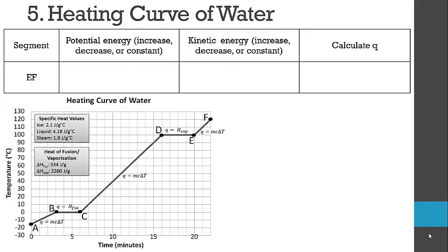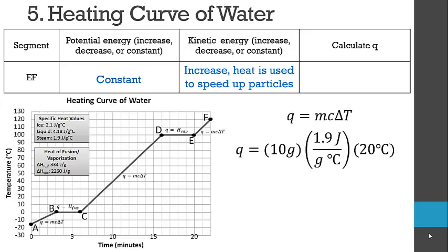In segment EF, the temperature starts to change again, so potential energy is constant and kinetic energy is increasing. Using Q = MCΔt, the temperature change is from 100 to 120 degrees Celsius with 10 grams of water now as steam. Using the specific heat of steam, we get 380 joules. To calculate the total energy for the entire heating curve, we add up each segment's Q value — giving the total energy to go from negative 15 to 120 degrees Celsius for 10 grams of water.